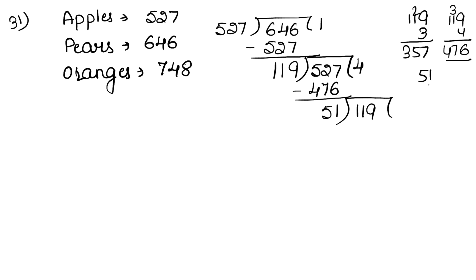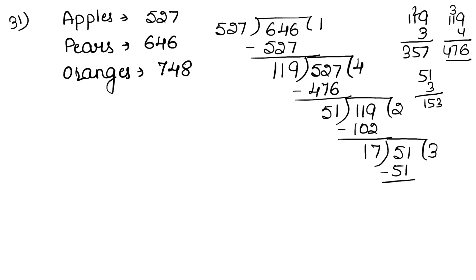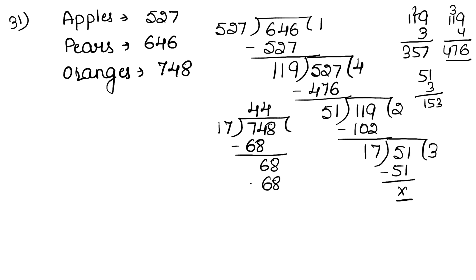Now 119 divided by 51. 3 times 51 is 153 — that's too much. 2 times: 102. Subtract: 9 minus 2 is 7, 1 minus 0 is 1. Remainder is 17. Now 51 inside again. 17 times 3 is 51 — it divides exactly. So HCF is 17. That means the maximum number of fruits in each heap is 17.